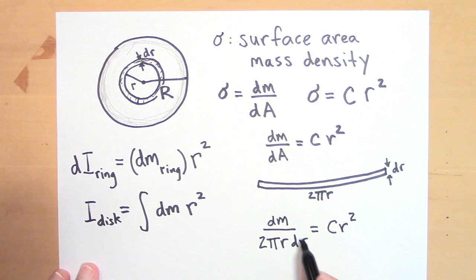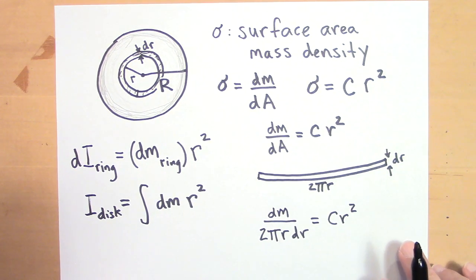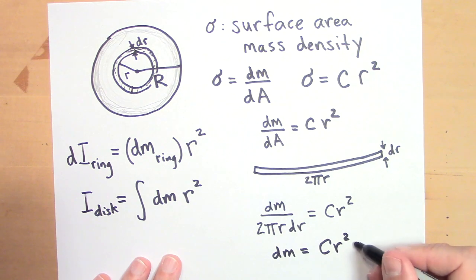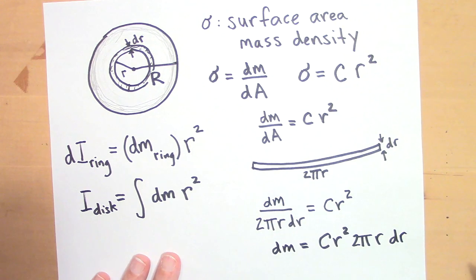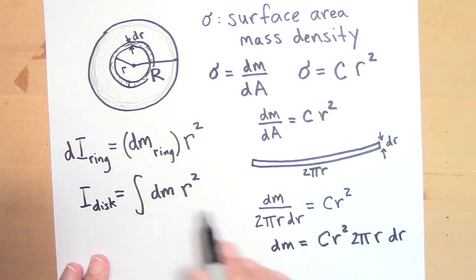That's equal to Cr squared. Let me bring the stuff in the denominator to the other side. So dM is equal to Cr squared times two pi r dr. Okay. Perfect. Because that's going to allow me now to take that dM and turn it into something that has a dr in it, because I need my variable and my differential to be of the same variable.